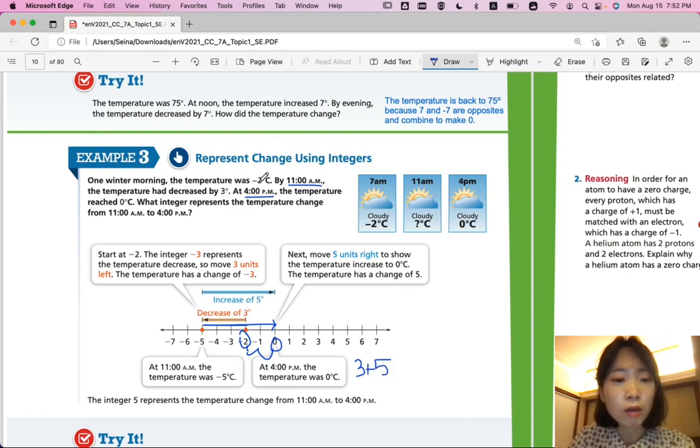Wait, no. I'm so sorry. From 11 to 4, it only, this is 11 a.m., it starts from negative 5. And then to 4, it increases 5 degrees. So from 11 to 4, it just increases 5. So the integer positive 5 represents the temperature change from 11 to 4.